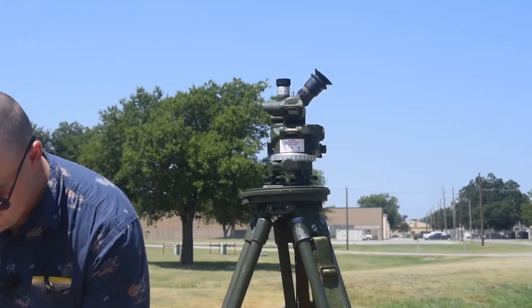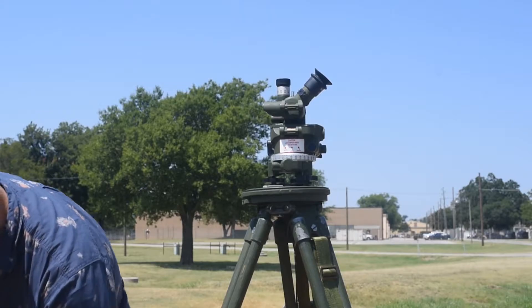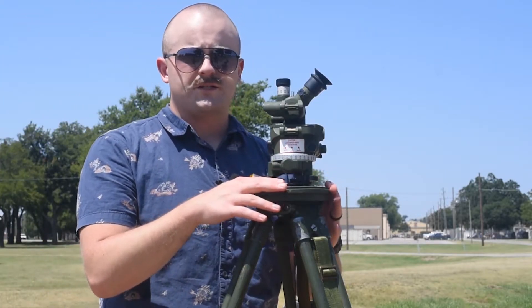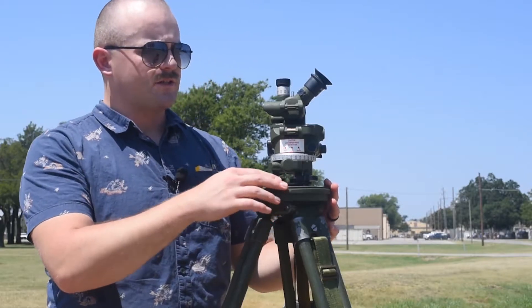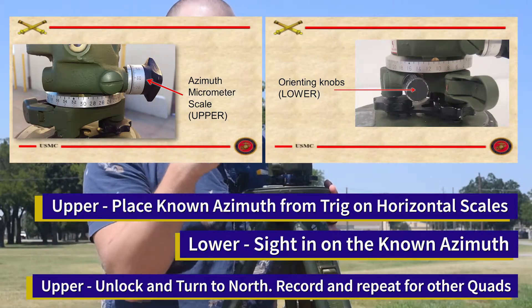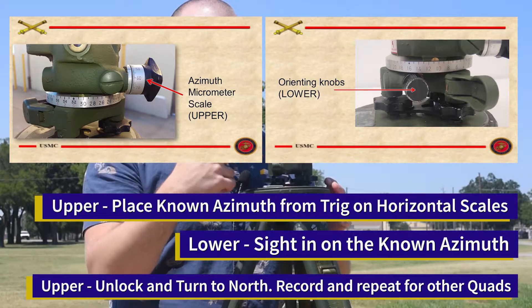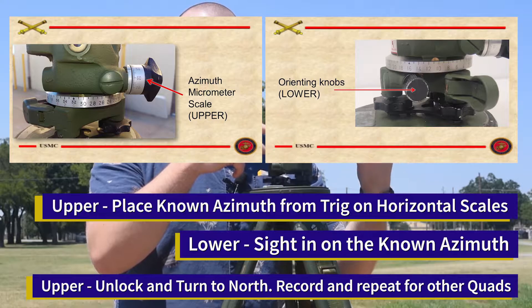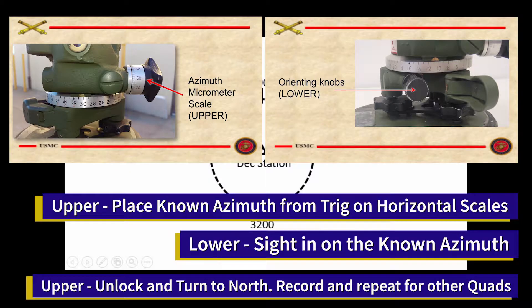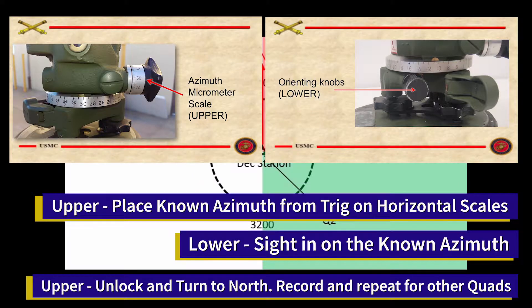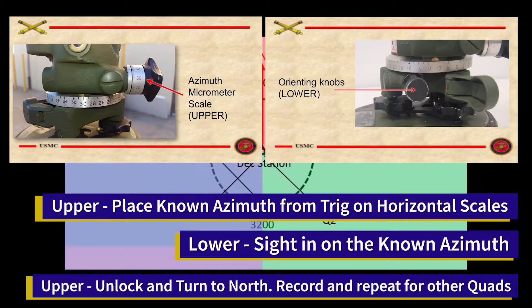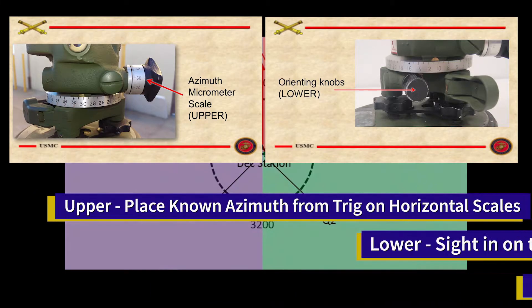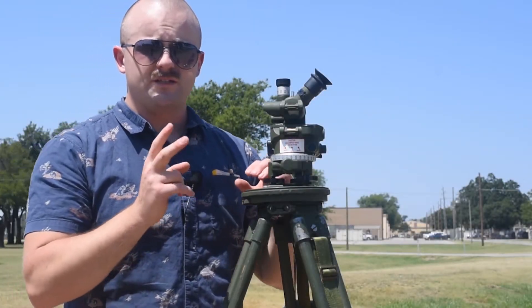Now I can actually begin the declination process. This is essentially going to be: upper — known azimuth; lower — side in on unknown azimuth; upper — turn to north and record. I'm going to rinse and repeat that until I have at least two readings that are within two mils of each other.